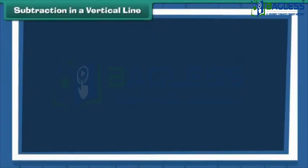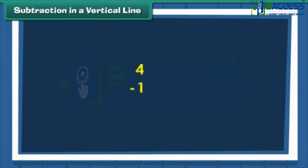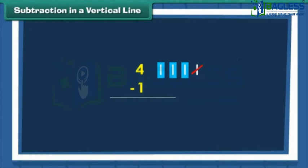Subtraction in a vertical line. Let us now subtract numbers vertically. To do so, write the numbers one below the other. To subtract one from four, write four first, then write one below it. Draw four vertical lines next to four and cross out one vertical line to subtract one. How many vertical lines are left? One, two, three. Therefore, four minus one is three.